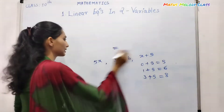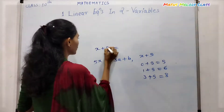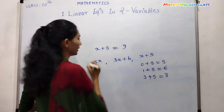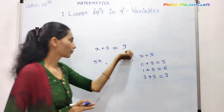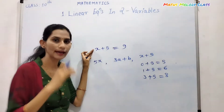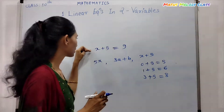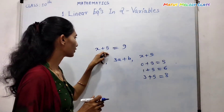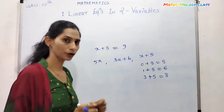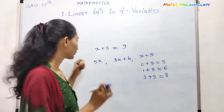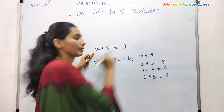Now consider this statement: x plus 5 is equal to 9. It means that for a certain value of x, the value of the expression x plus 5 becomes 9. So we put x to a particular value and the result is 9.